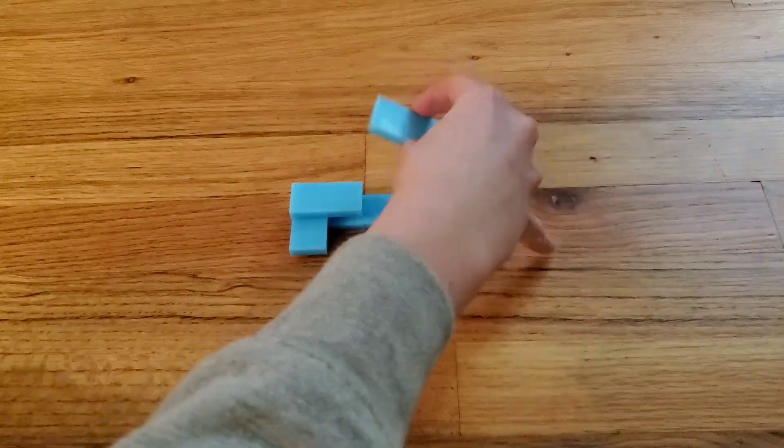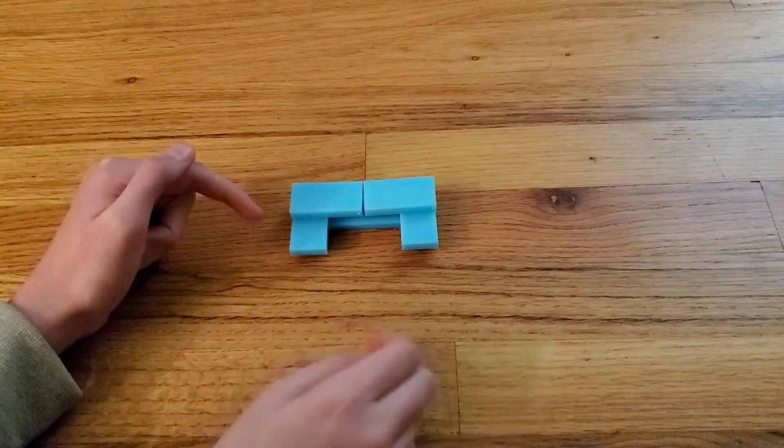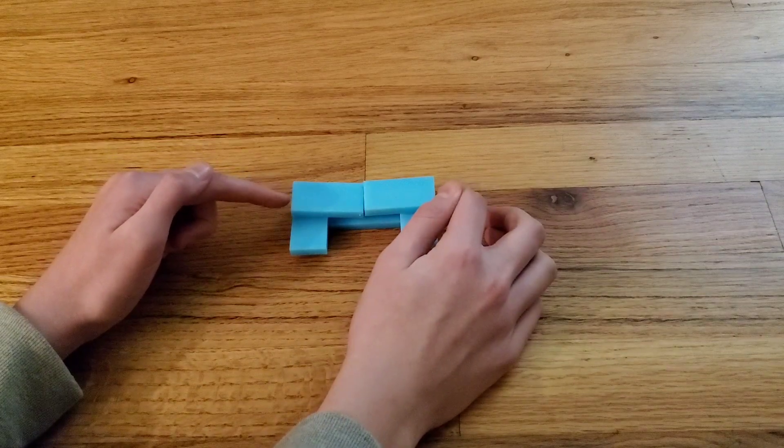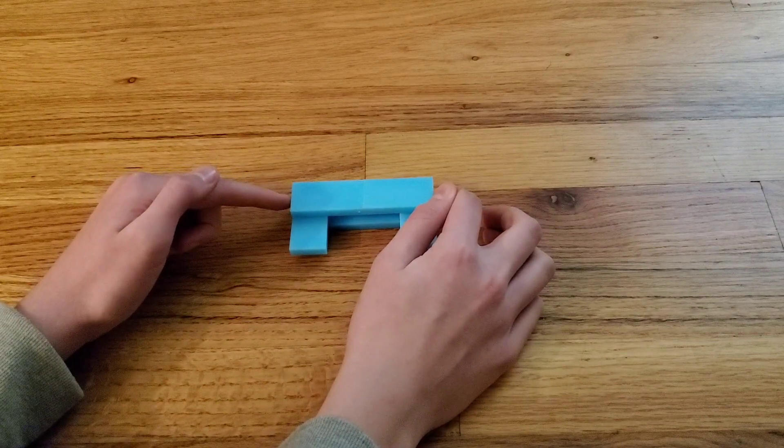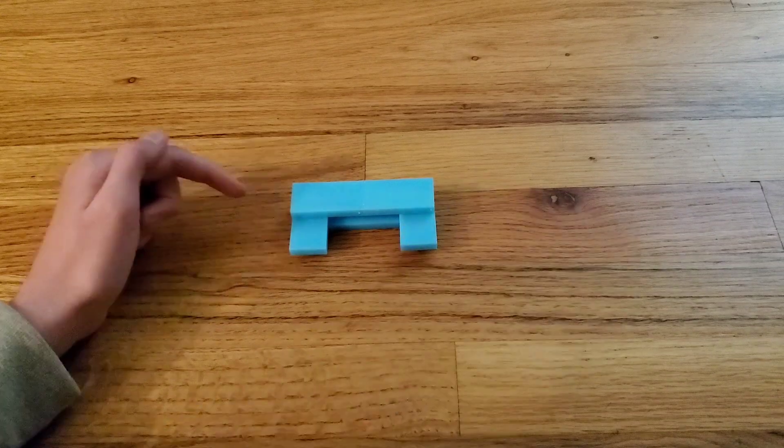Take another ice domino, mirror what we did on the left side, then push these two together so that they're touching like that.